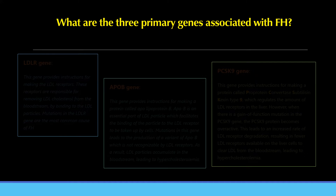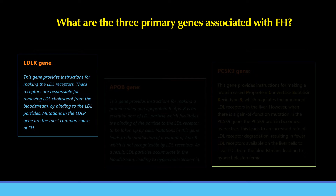What are the three primary genes associated with FH? There are three known genes involved in FH. The first is the LDLR gene, which provides instructions for making LDL receptors. These receptors are responsible for removing LDL cholesterol from the bloodstream by binding to LDL particles. Mutations in the LDLR gene are the most common cause of FH.